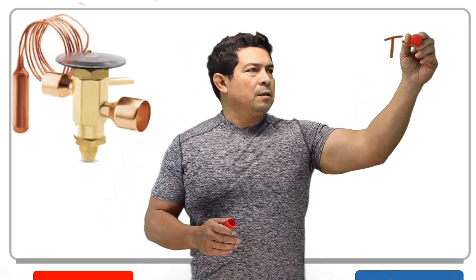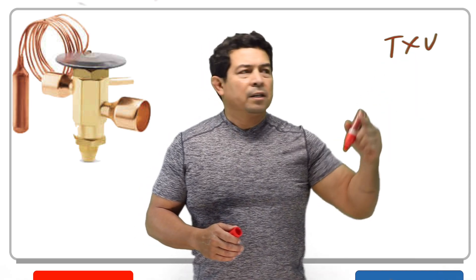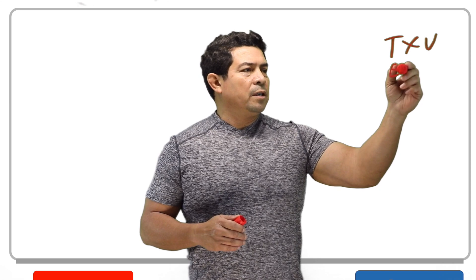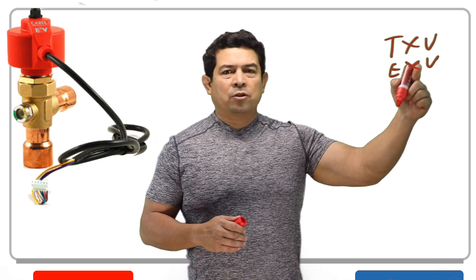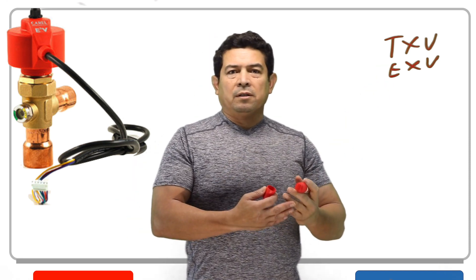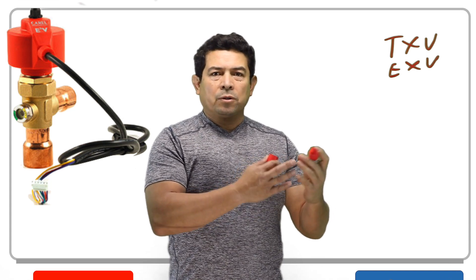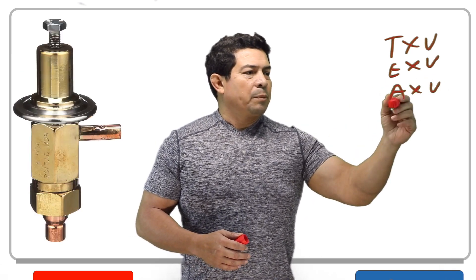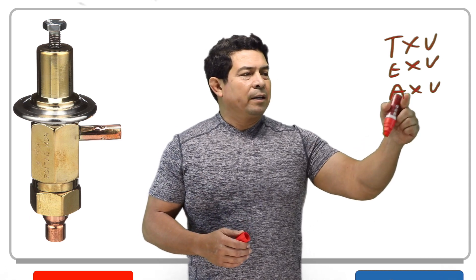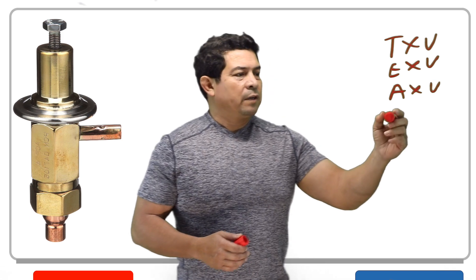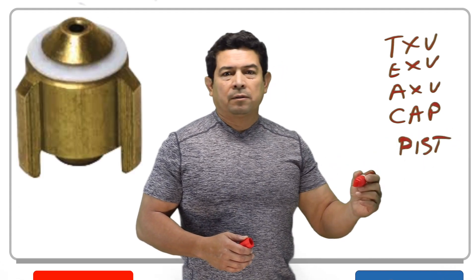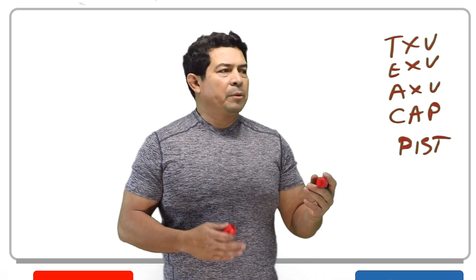Out there in the field, most of the time what you see is what they call a TXV — thermostatic expansion valve. Like the name implies, thermostatic, it has to do with temperature. Then there's the EXV, electronic expansion valve — electronic because it uses electricity. Then there's the AXV, also called AEV by some — automatic expansion valve. Then there is your capillary tube, and then there is your piston. So these are the five more common metering devices out there.